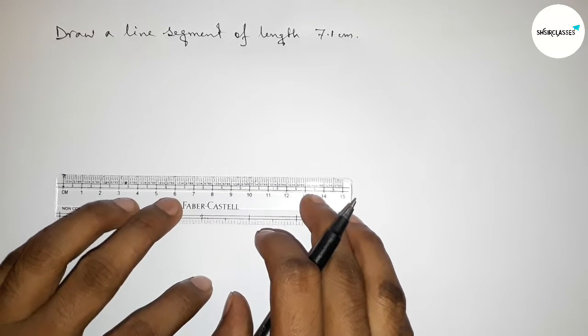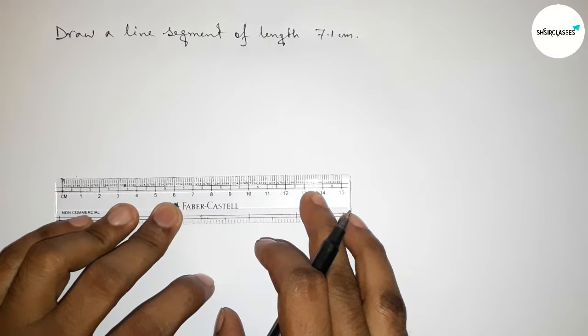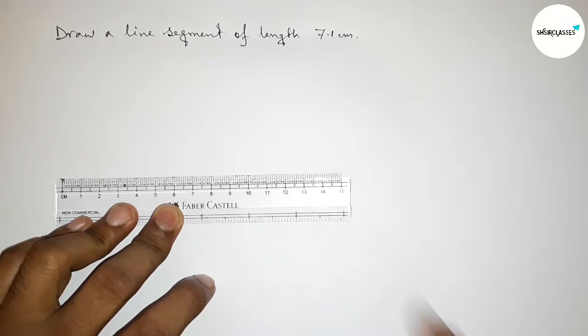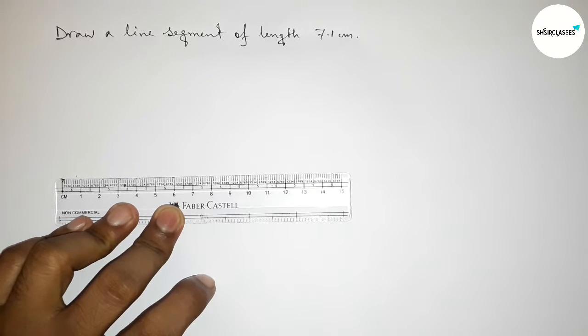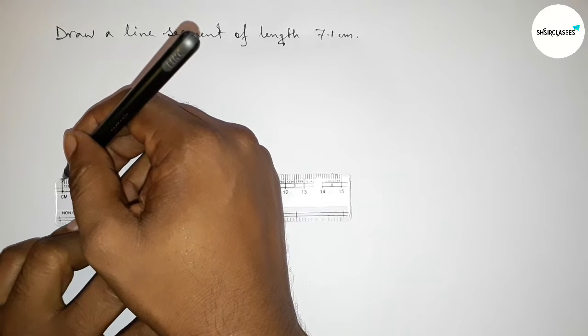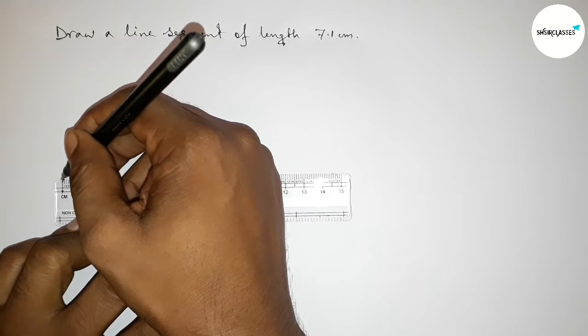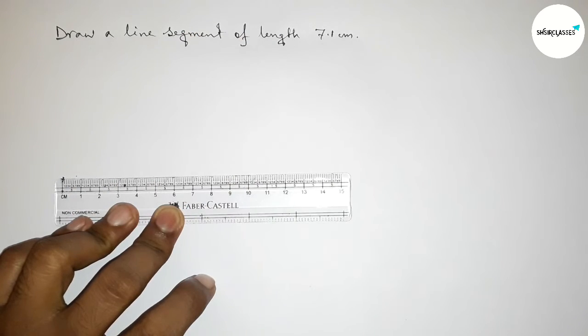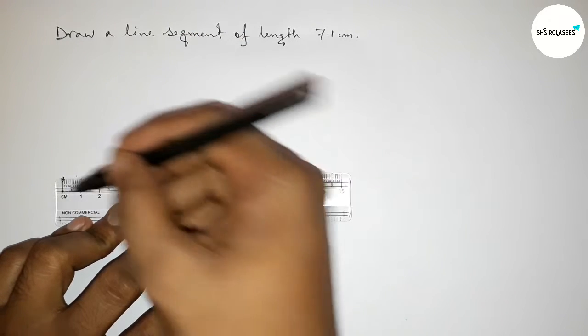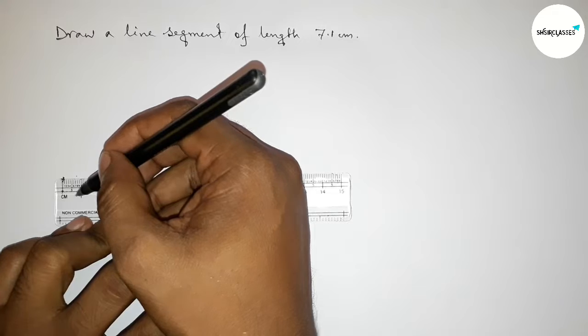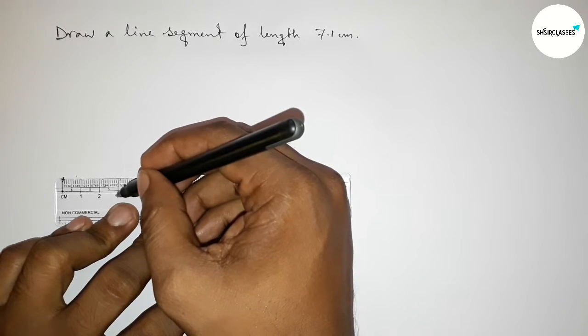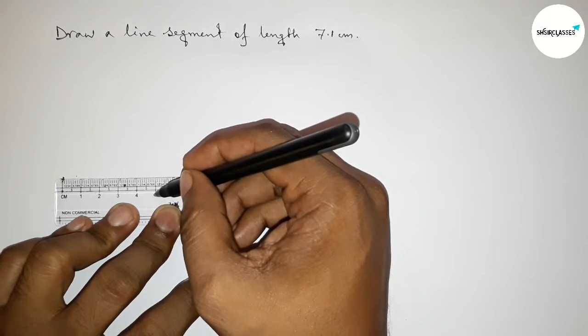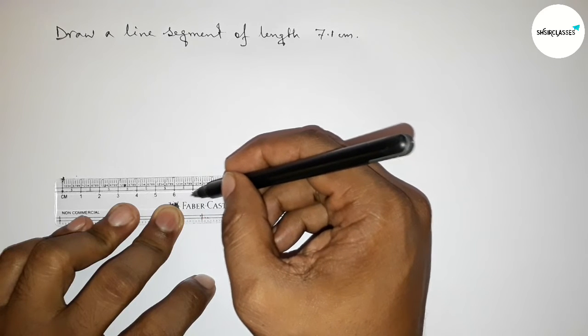First, put the scale here perfectly and measure the length 7.1 centimeters. So first, mark here. This is the starting, 0 centimeter. Now counting: this is 0, 1, 2 centimeters, 3 centimeters, 4, 5, 6, 7...